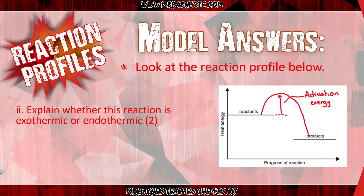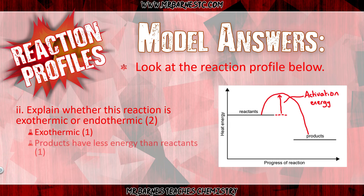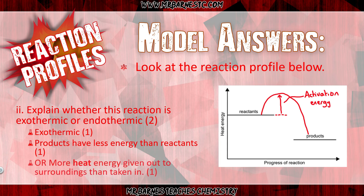For part two, you should have got that it's exothermic — that's the first mark. The second mark is for your reasoning: either that the products have less energy than the reactants, or that more heat energy has been given out to the surroundings than taken in. It's important to include the term 'heat energy'.